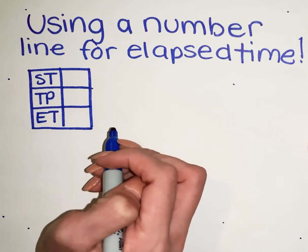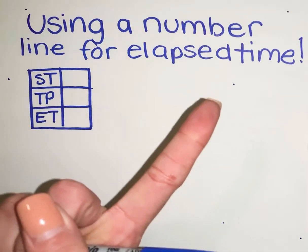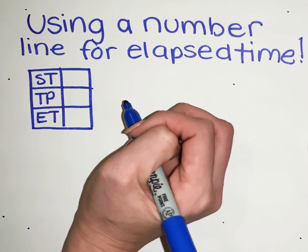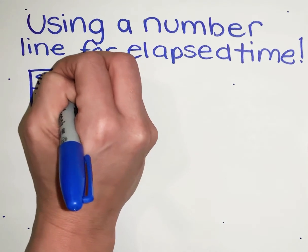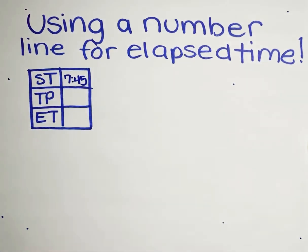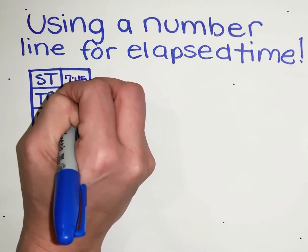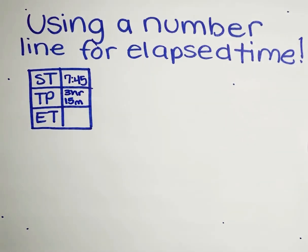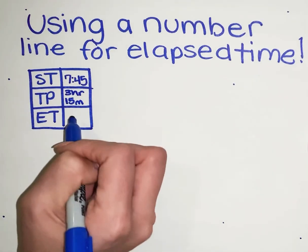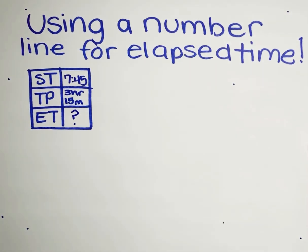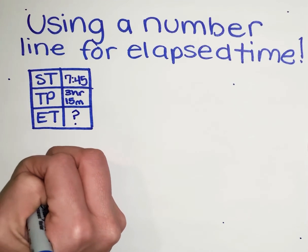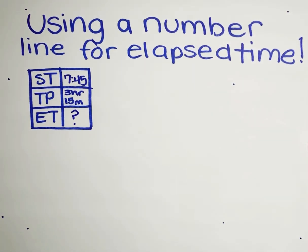So let's say in your word problem today they give you a start time and the time that has passed. Your trip starts at 7:45, and your trip will take three hours and 15 minutes. The end time is the unknown. So what we're going to do today is show you how to use a number line to identify the end time.